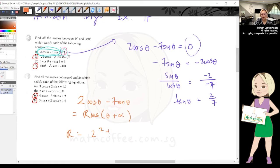Your task is to change it into single trig. My R is √(2² + 7²), which equals √(4 + 49) = √53.